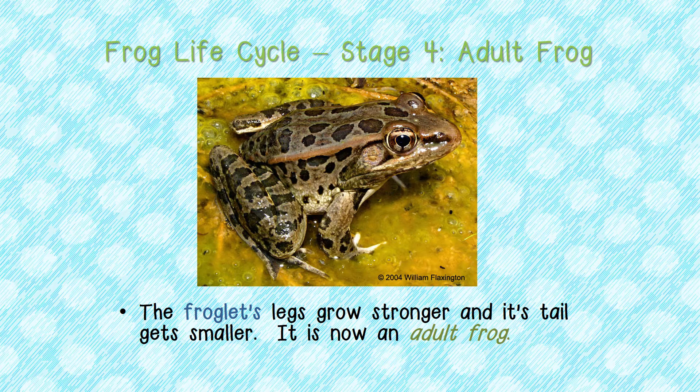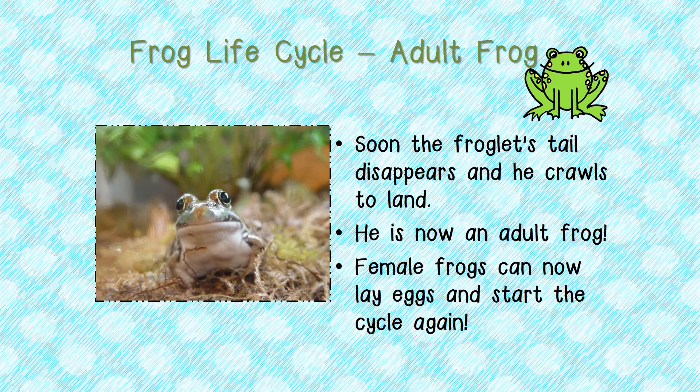The last stage of a frog's life cycle is when it becomes an adult. The froglet's legs grow stronger and its tail gets smaller. It is now an adult frog. Soon the froglet's tail disappears and he crawls to land. He is now an adult frog. Female frogs can now lay eggs and start the cycle again. And this, children, is the life cycle of a frog.